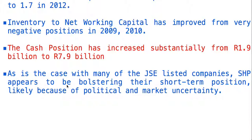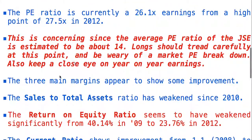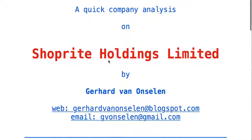As is the case with many JSE-listed companies, ShopRite appears to be bolstering their short-term position likely because of political and market uncertainty. The fair warning for this year is the concern about a possible multiple contraction of the overall JSE market, along with the diluted earnings per share coming under pressure. This was a quick company analysis on ShopRite Holdings Limited. My name is Gerard van Anselen — thank you, I'll talk to you again.